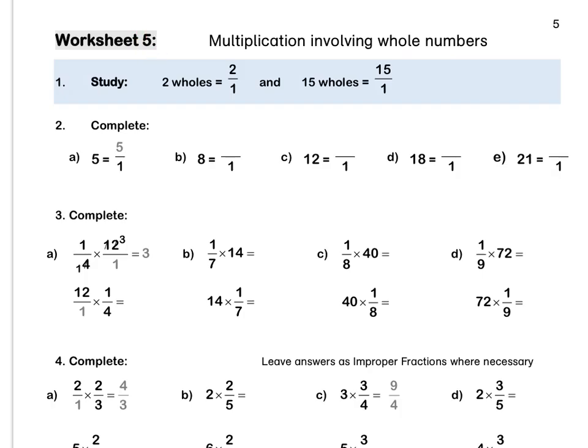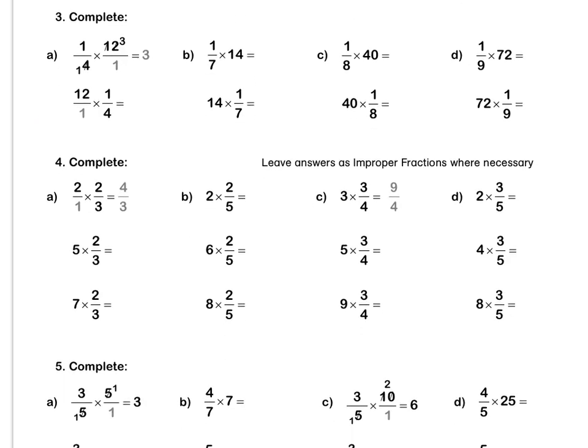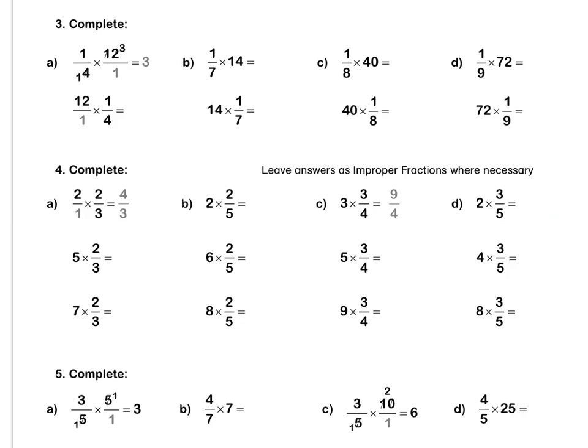Worksheet 5. Study: 2 wholes is equal to 2 over 1, and 15 wholes is equal to 15 over 1. Press pause to complete question 2 by yourself. Question 3: a quarter times 12 is the same as a quarter times 12 over 1. Then we simplify our 12 and our 4, multiply out and get 3 over 1, or 3 wholes.